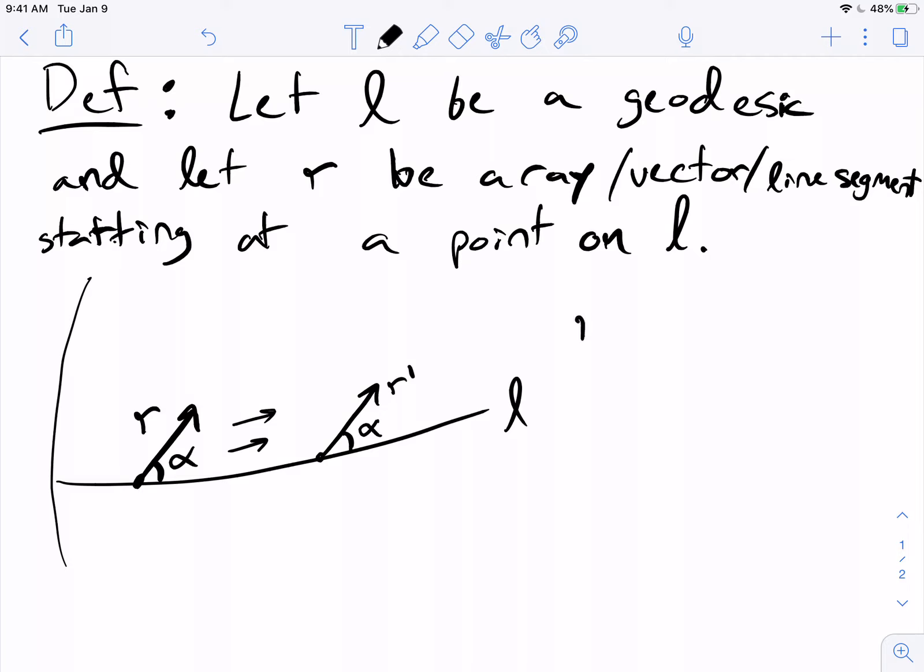So R prime is a parallel transport of R along L, so it depends on all these things, R and L.